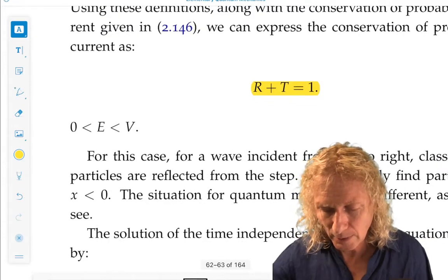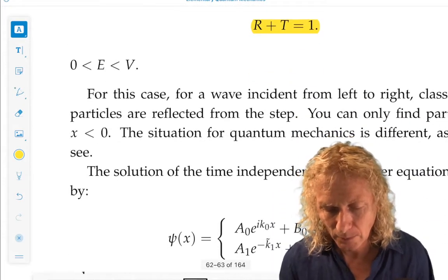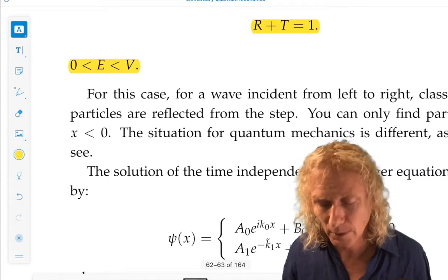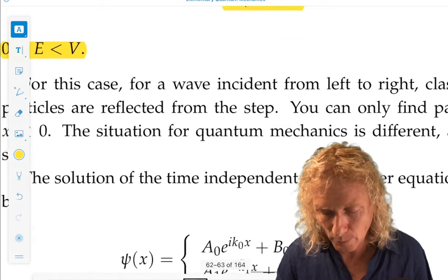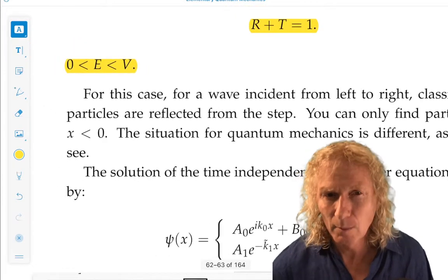Now we go to the next case. Zero less than e less than v. That's the classically forbidden case. The same strategy.